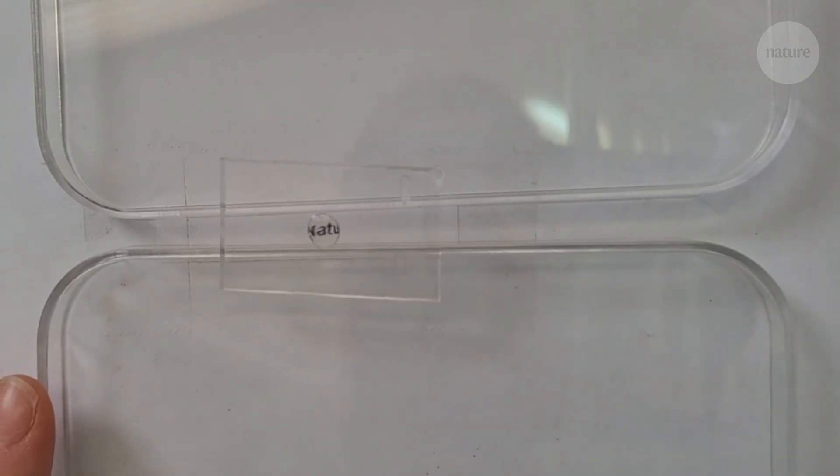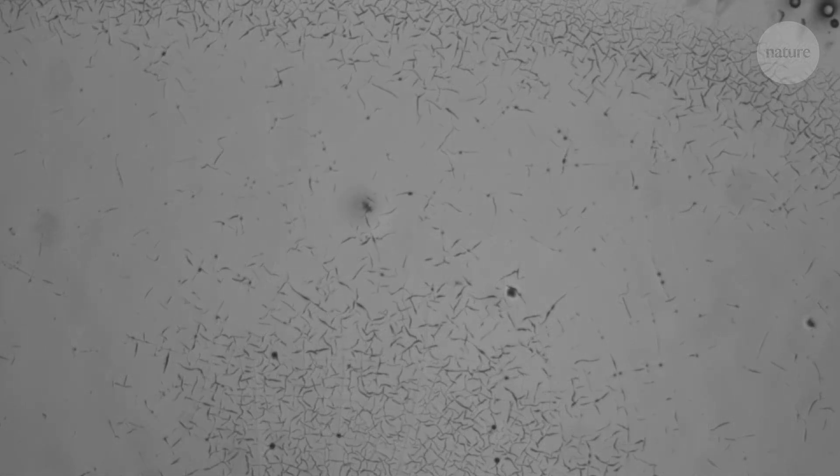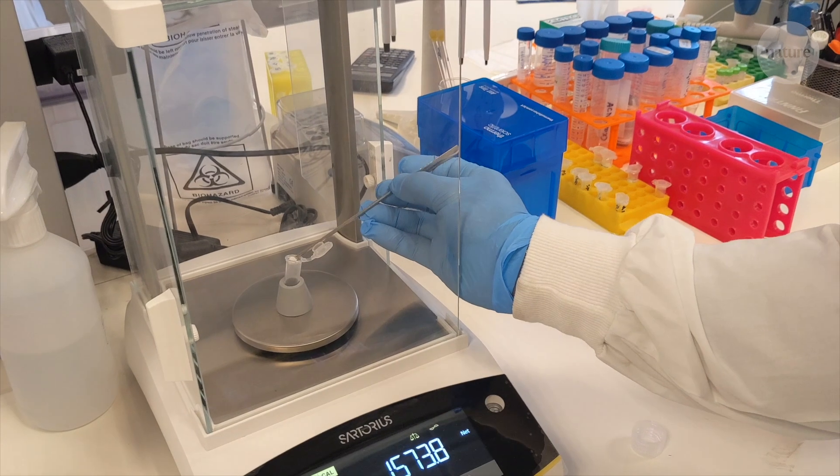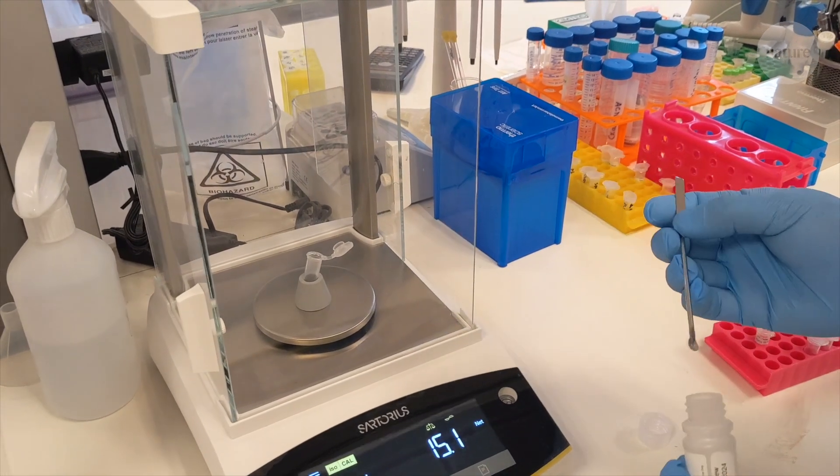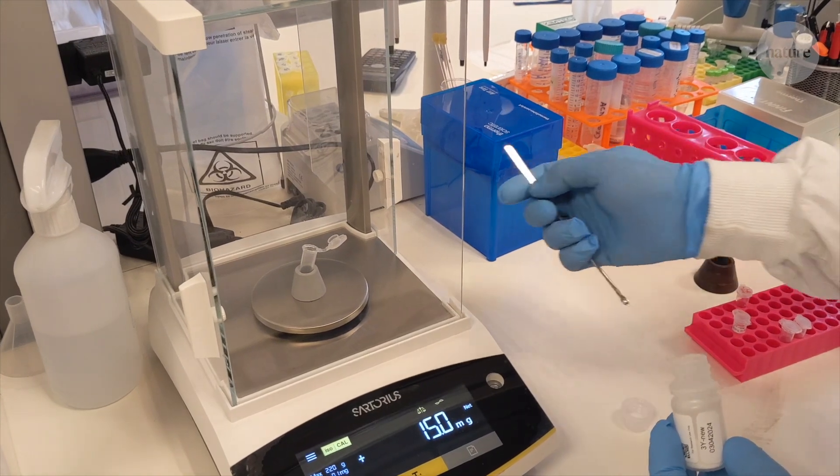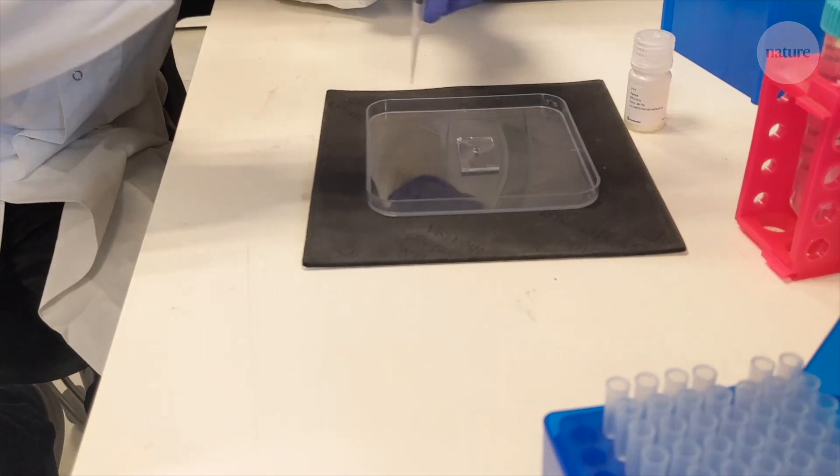This might look like a simple glass lens. But unlike conventional glass, this lens can heal itself if cracked. That's because, like human hair or muscle, it's made from amino acids, the building blocks of life.